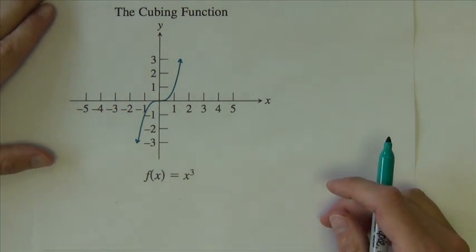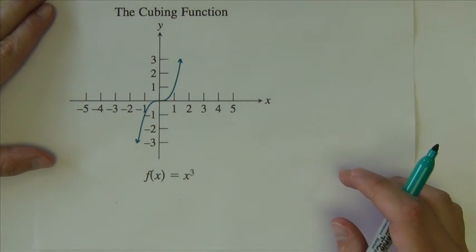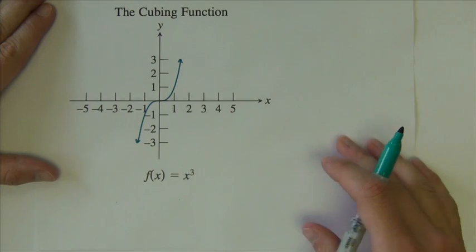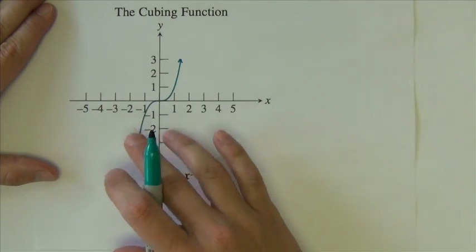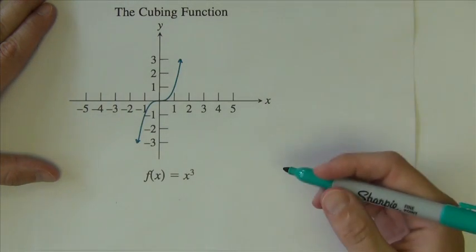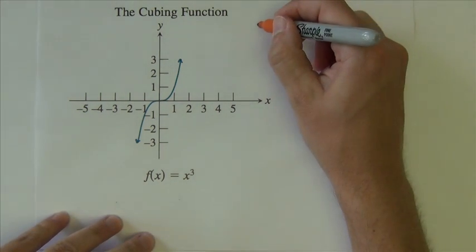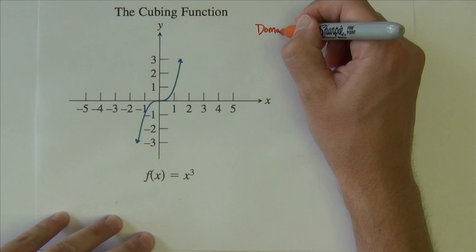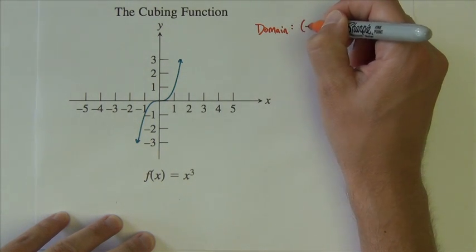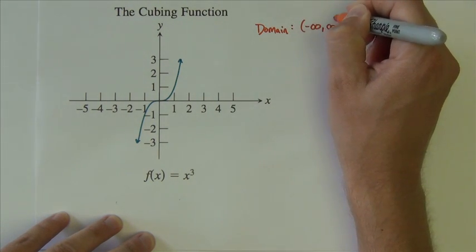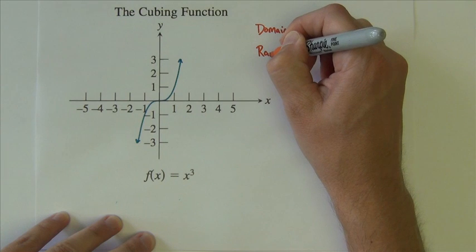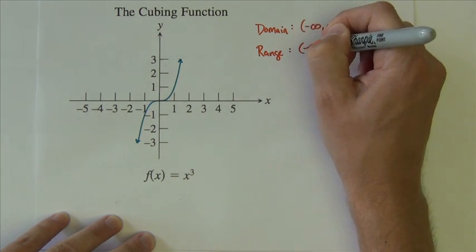Next, let's look at the cubing function, or sometimes called just the cubic function. Looks like this. We have no doubt seen this one before. It has a domain and range that we are familiar with. Its domain is negative infinity to positive infinity. Its range is the same.